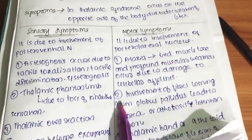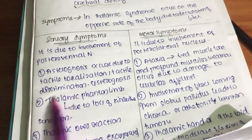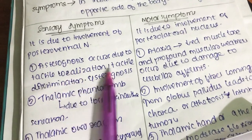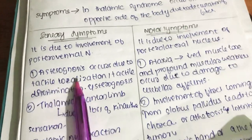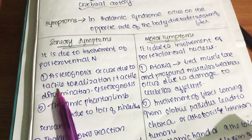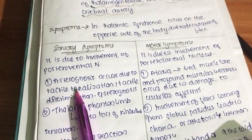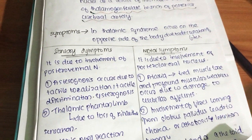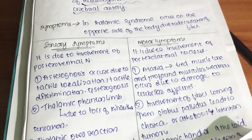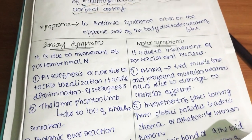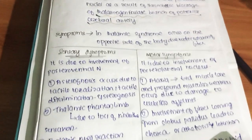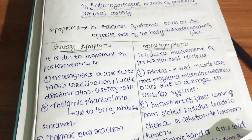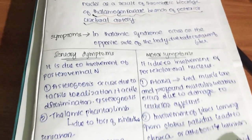The first sensory symptom is astereognosis, which occurs due to impaired tactile localization and tactile discrimination. Astereognosis means that if a subject closes their eyes, they are not able to identify the object in their hand — they cannot recognize or guess it by touch alone.